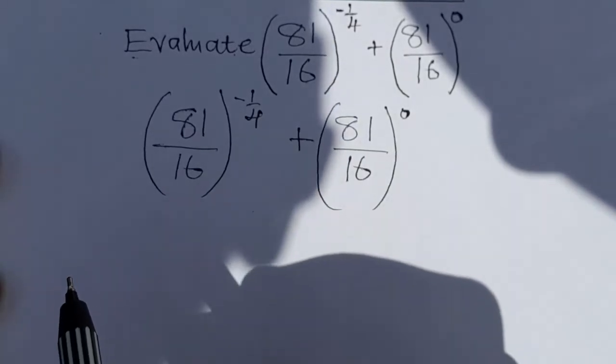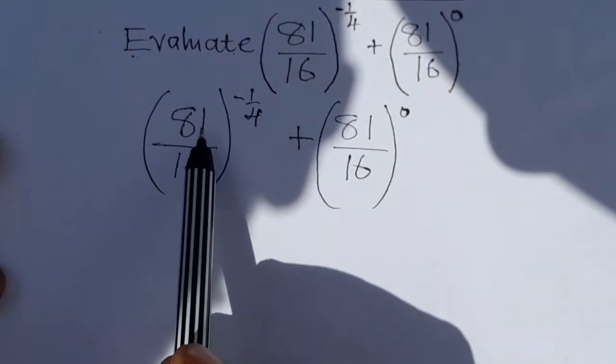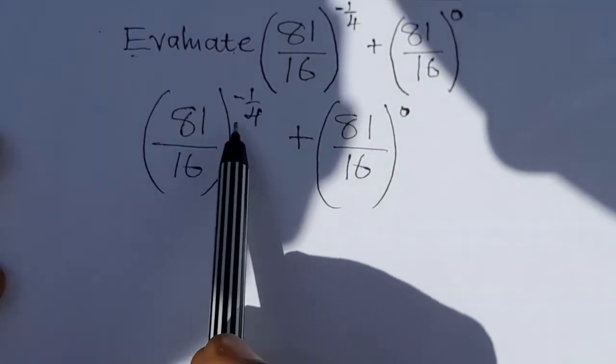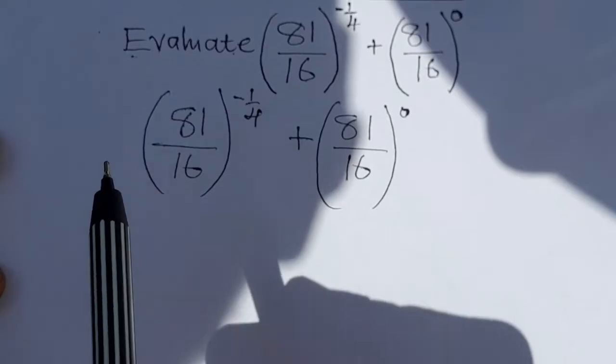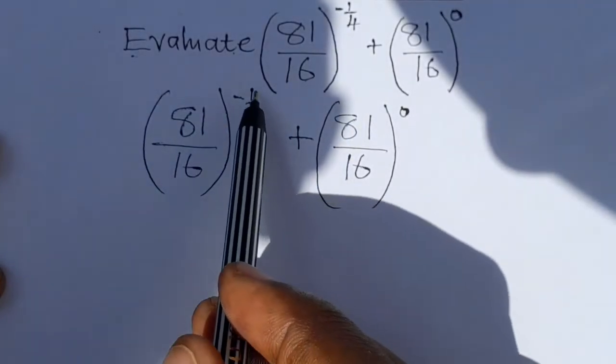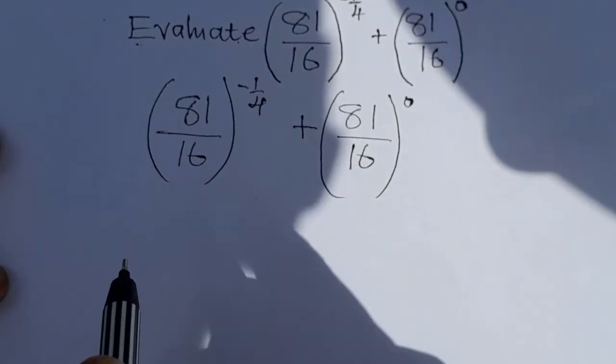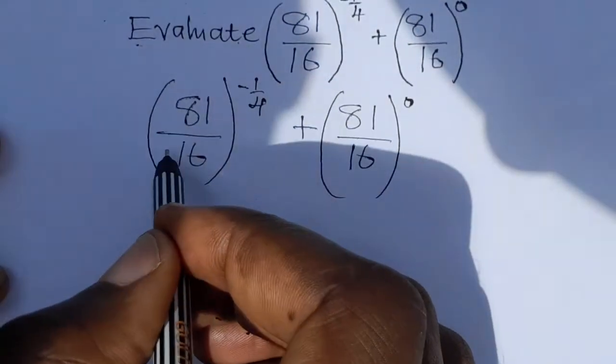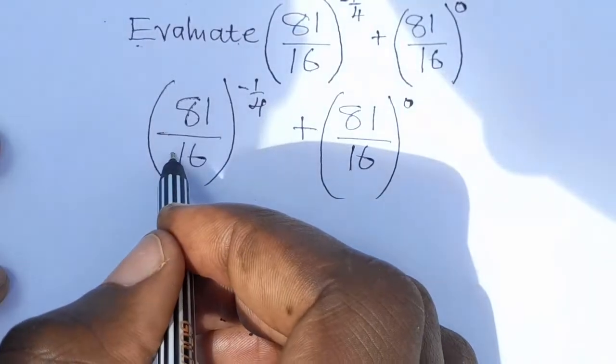When you look at the first fraction you can see that it has been raised to a negative power. So the first thing that you are supposed to do is to change the negative power into positive, and you are going to do that by swapping or switching the denominator with the numerator. The denominator will go up and the numerator will come down.